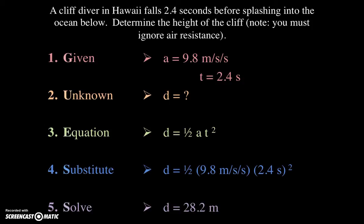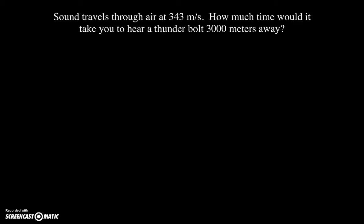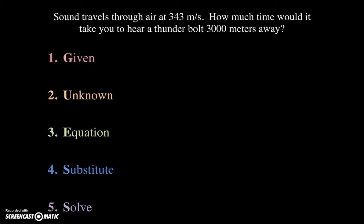Let's do one more example of this. Sound travels through air at 343 meters per second. How much time would it take you to hear a thunderbolt 3,000 meters away? Well, first of all, there are two obvious givens. We see the numbers, 343 meters per second and 3,000 meters away. So we're going to call that a speed and a distance.